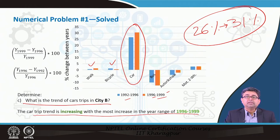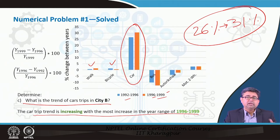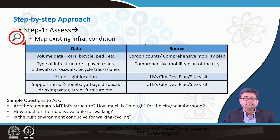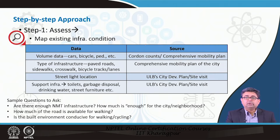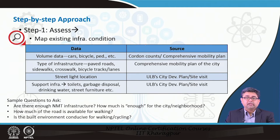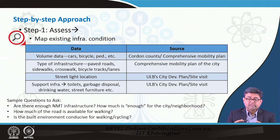These simple examples clarify how you can use data from your city's comprehensive development plans or comprehensive mobility plans to assess the existing transportation situation. The next step in assessing conditions is to map the existing infrastructure and its condition. Now that you know your city's data and trends, you have to develop a map of the existing infrastructure that is in place.